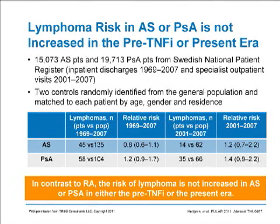An abstract from the ACR meeting this year looked at the large Swedish database comparing ankylosing spondylitis and psoriatic arthritis patients with the cancer database for lymphoma risk. Looking overall from 1969 through 2007, and specifically at 2001 to 2007 when TNF inhibitors were more widely used in Sweden, there was no increase in risk for lymphoma in patients with AS or psoriatic arthritis. This is in distinction to what we've seen in rheumatoid arthritis in the same Swedish databases.